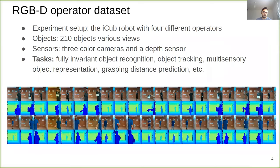The second data set that I will introduce is the RGBD operator data set. The acquisition of this data set is similar to the previous one, but here we employed four different operators to obtain different views of the objects.